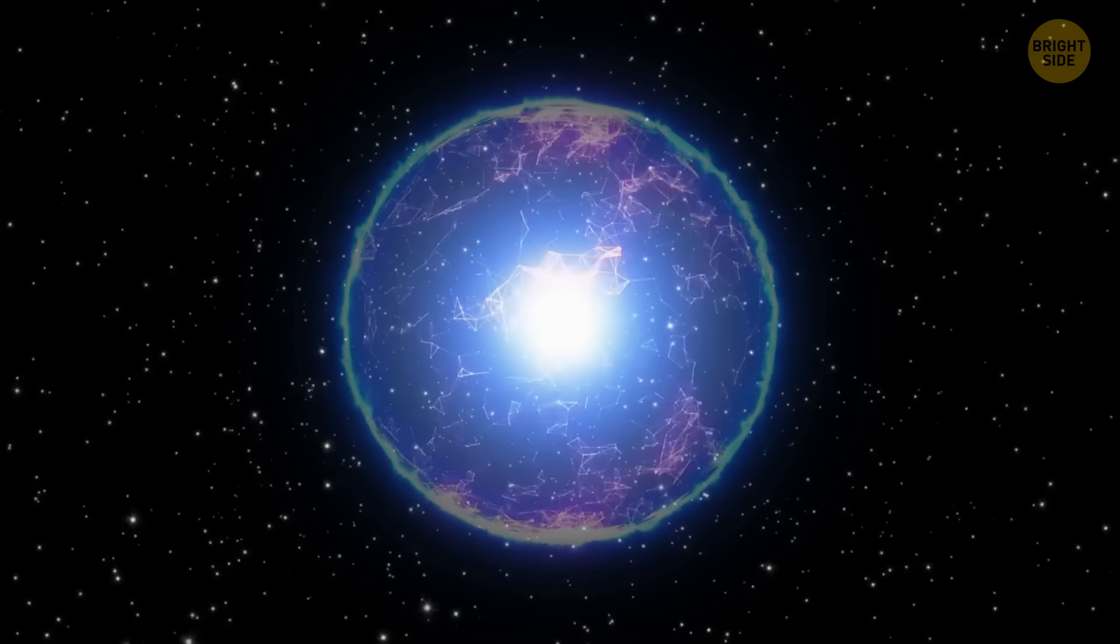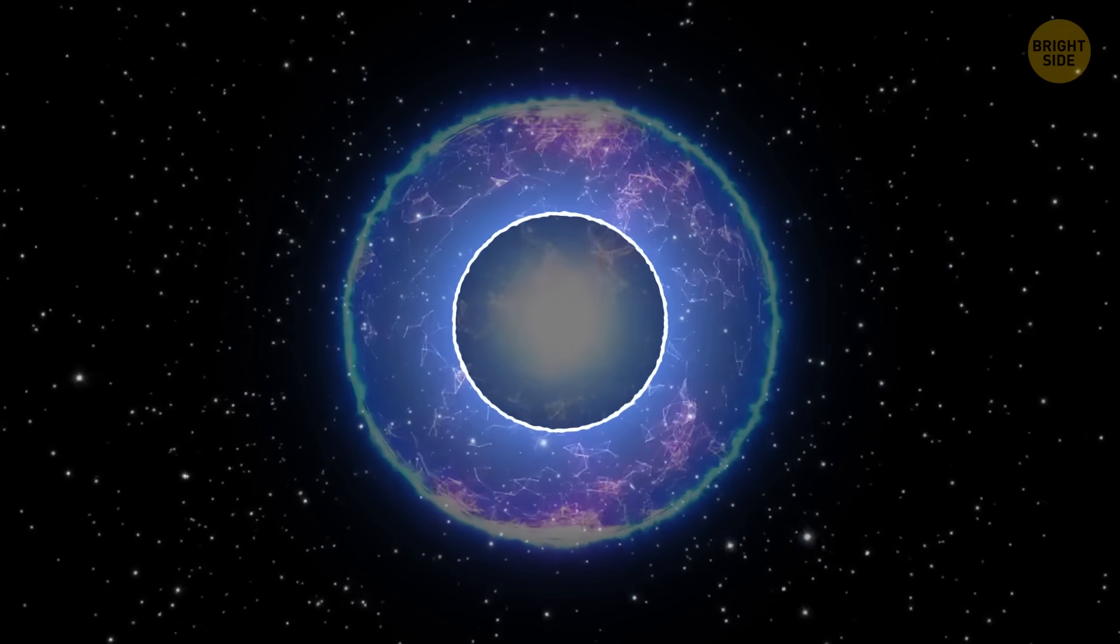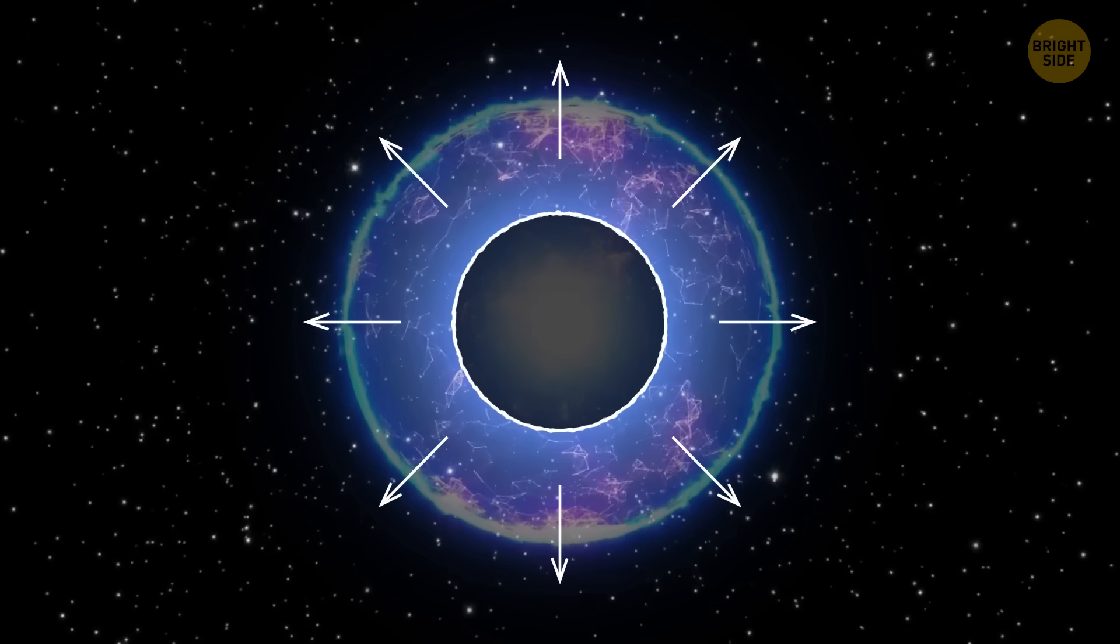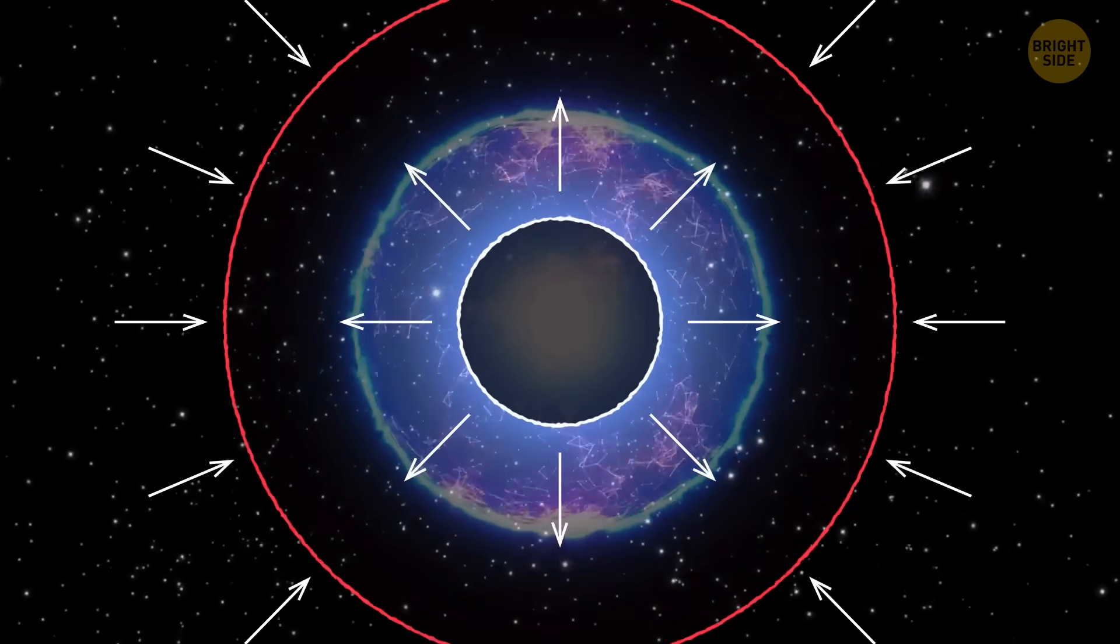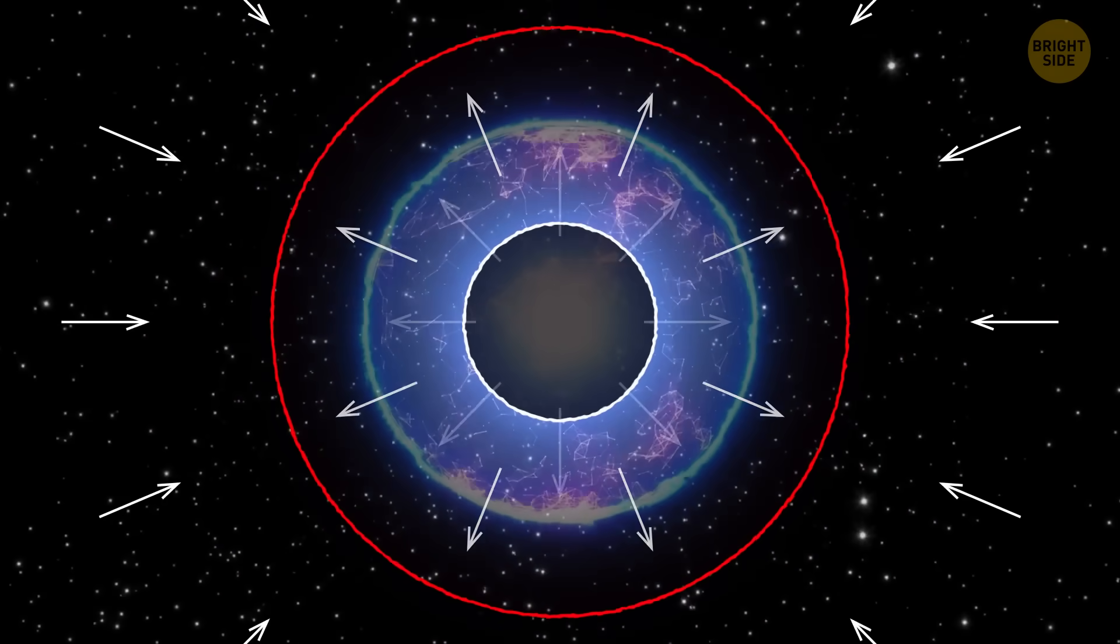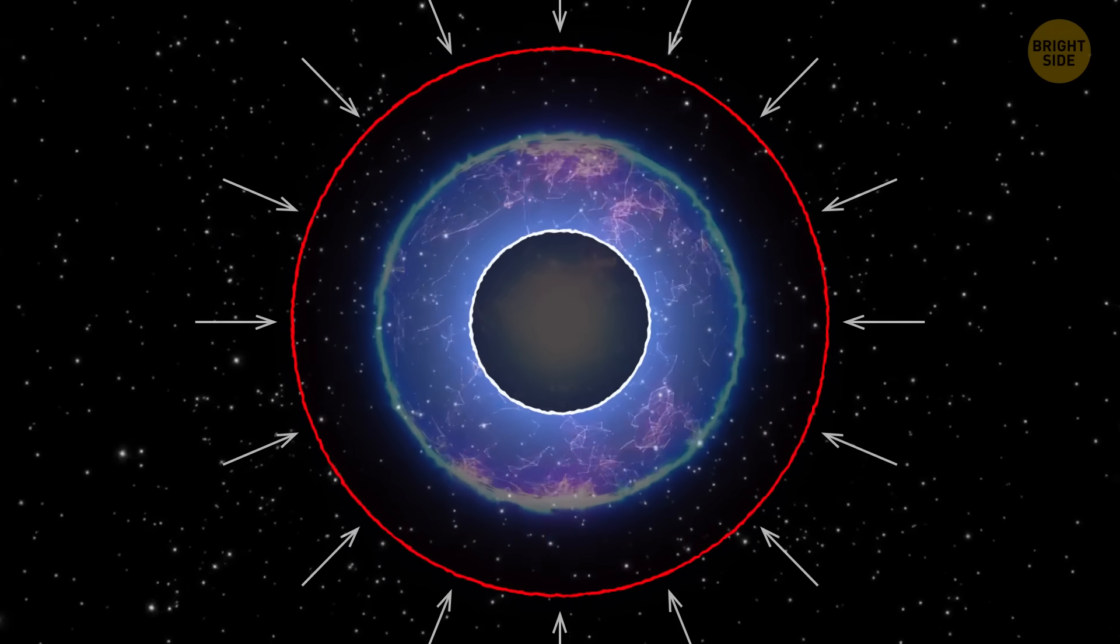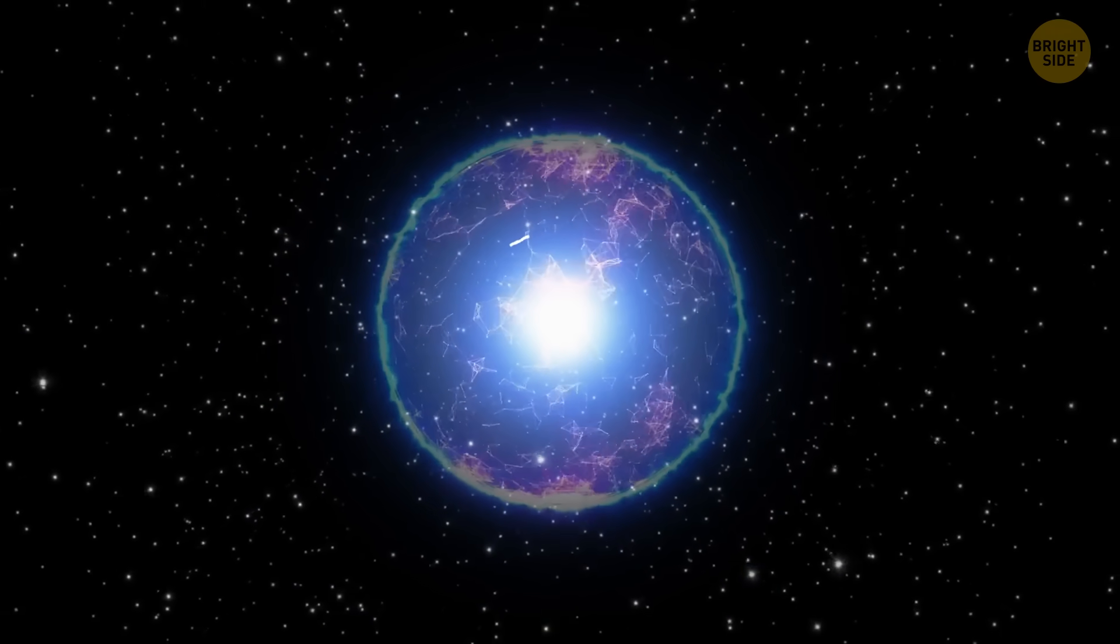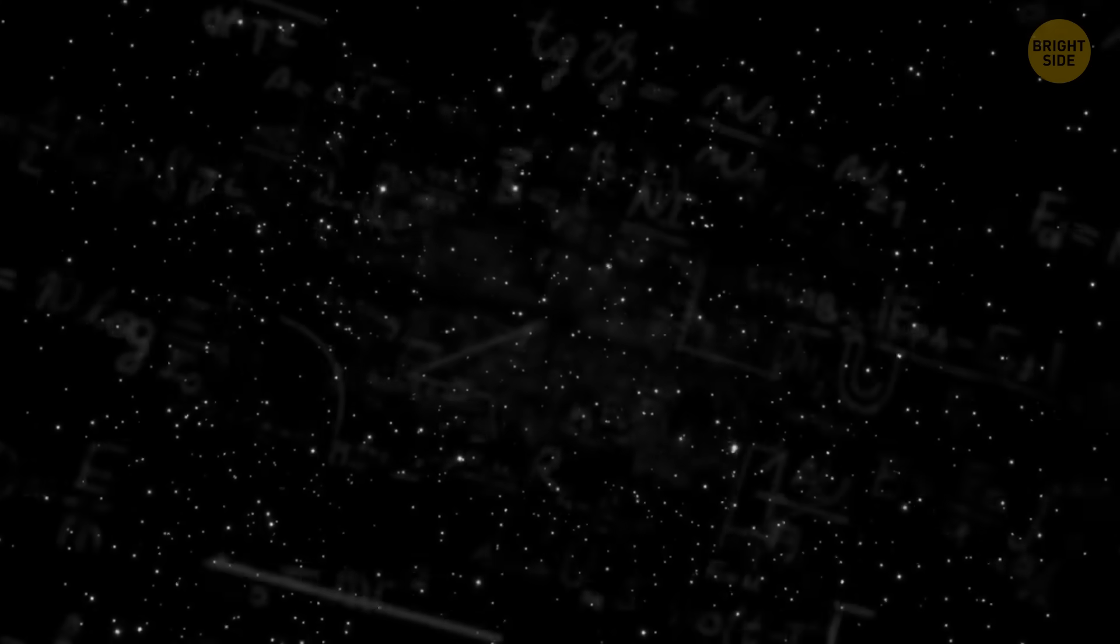At the core of a gravistar, there could be a region filled with false vacuum or dark energy. This energy would push outward, fighting the gravity. It's like the unstoppable force meets an immovable object. Thanks to this, the star core doesn't collapse into a black hole. Sounds wacky. We don't know what dark energy even is, so how can it fill up anything?